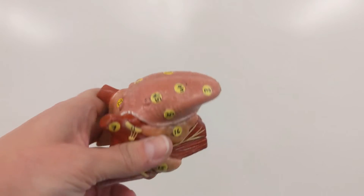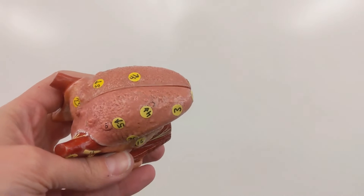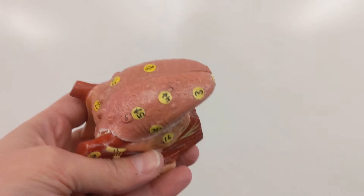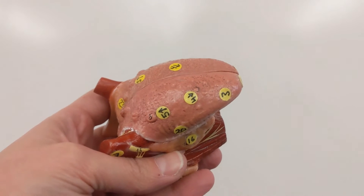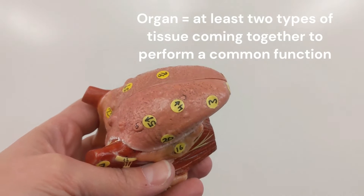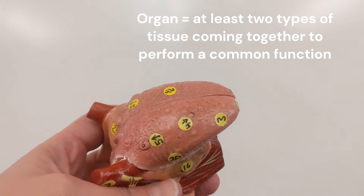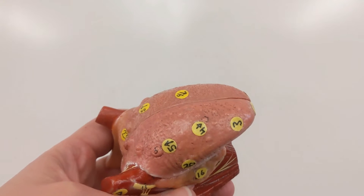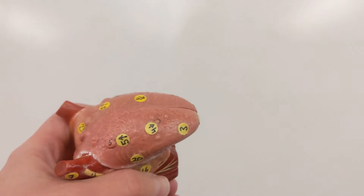What is this organ? This is the tongue. If you hesitated because you wondered if the tongue was an organ — what's the definition of an organ? An organ is at least two tissue types, but generally four, that are arranged together and perform a common function. Because the tongue has multiple tissue types and is performing a function, it is an organ. And what system is it part of? Digestive.